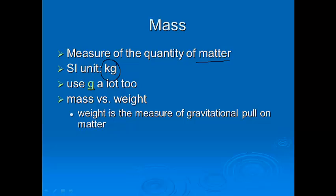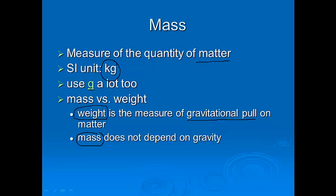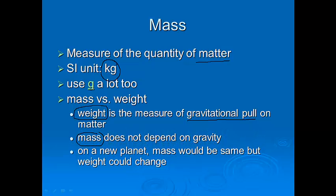Now, with mass versus weight, here's a new vocab word right here. Weight is the measure of gravitational pull on matter. All right, this is another example of where we have words that in our culture, in our society, we usually use mass and weight interchangeably, but they're actually different. Weight is gravitational pull. Mass is not. Mass is simply the amount of matter. Mass does not depend on gravity. So one of the best ways I know how to explain that is if you went to a new planet or somewhere else in the solar system, your mass would stay the same, but your weight could change depending on the gravity.